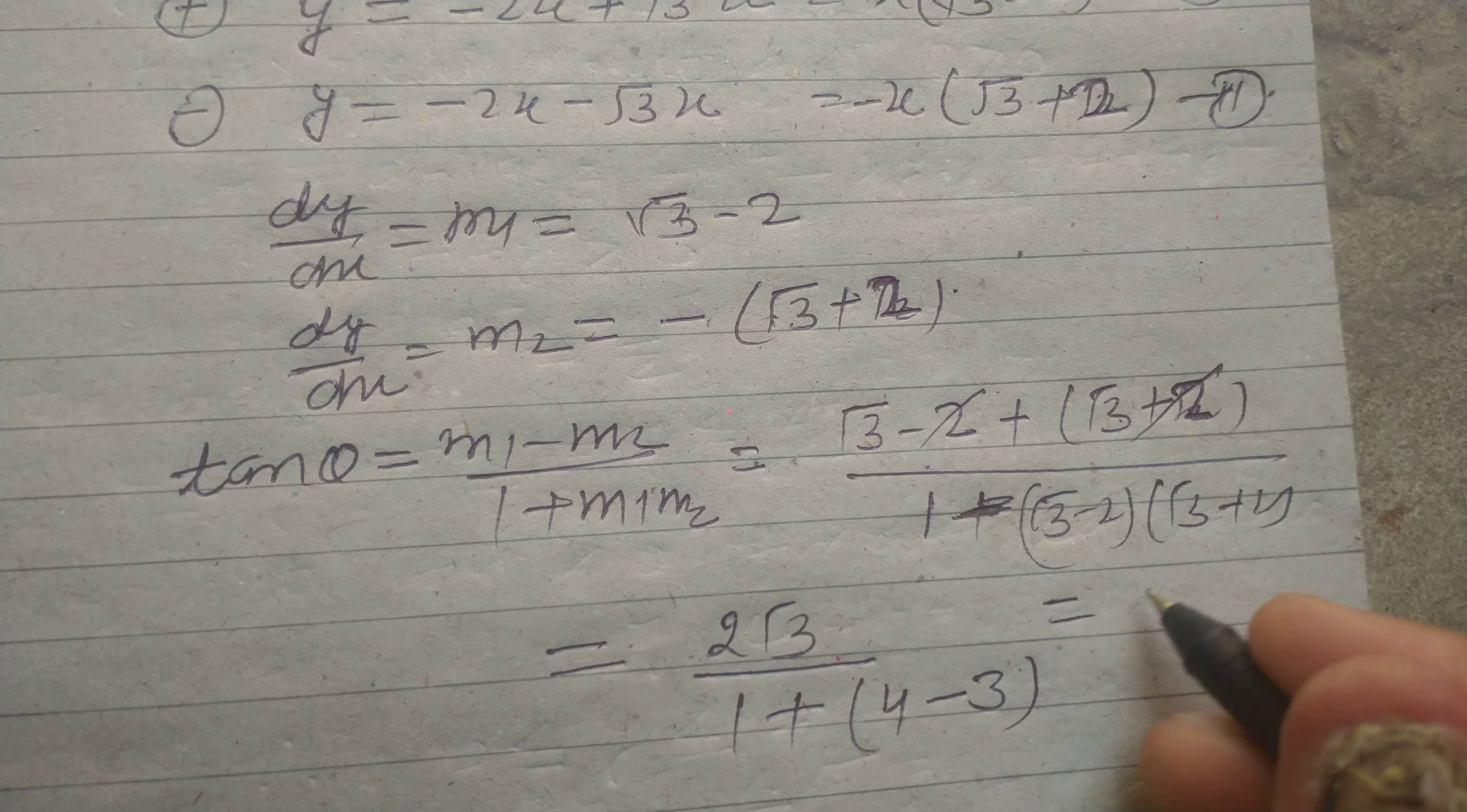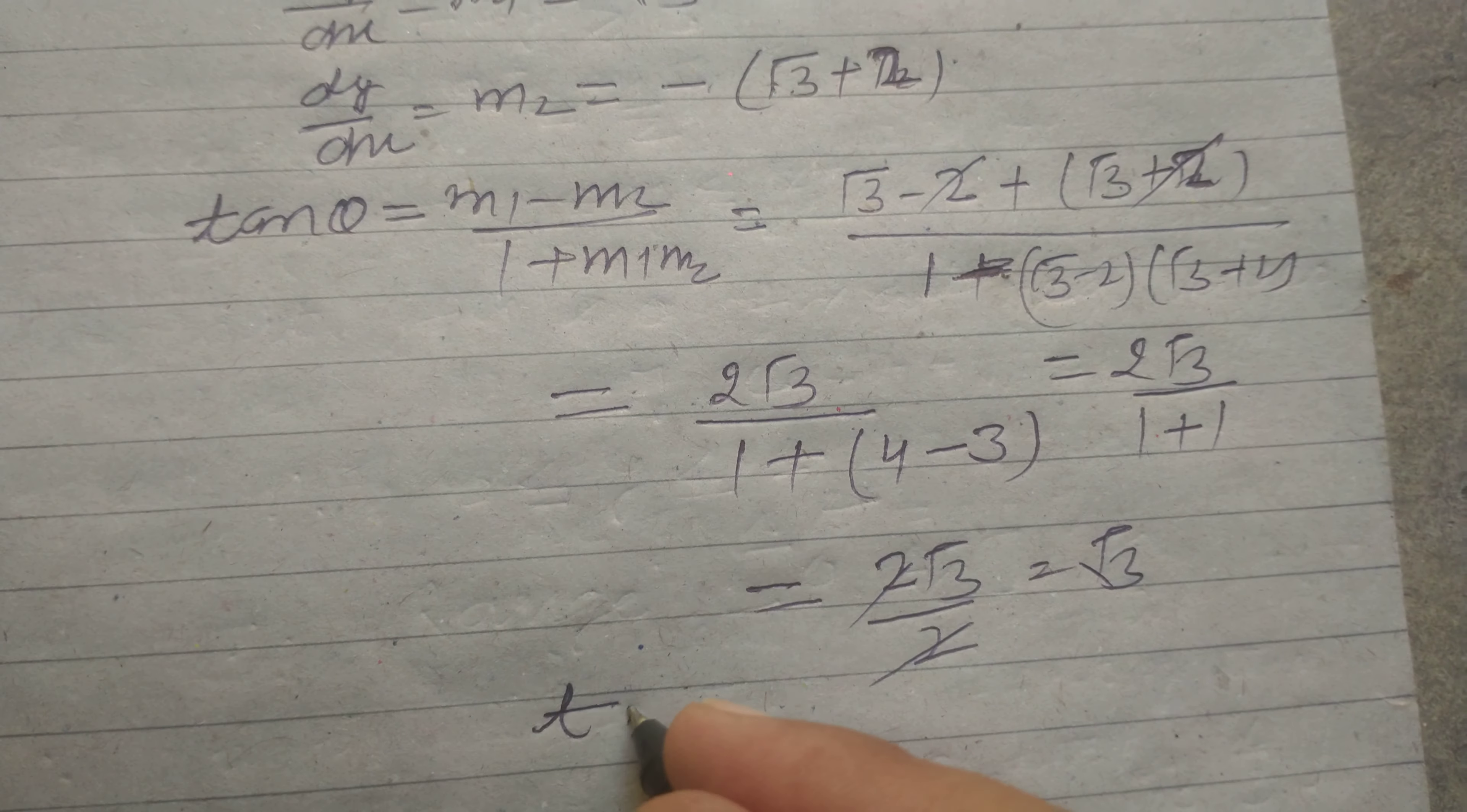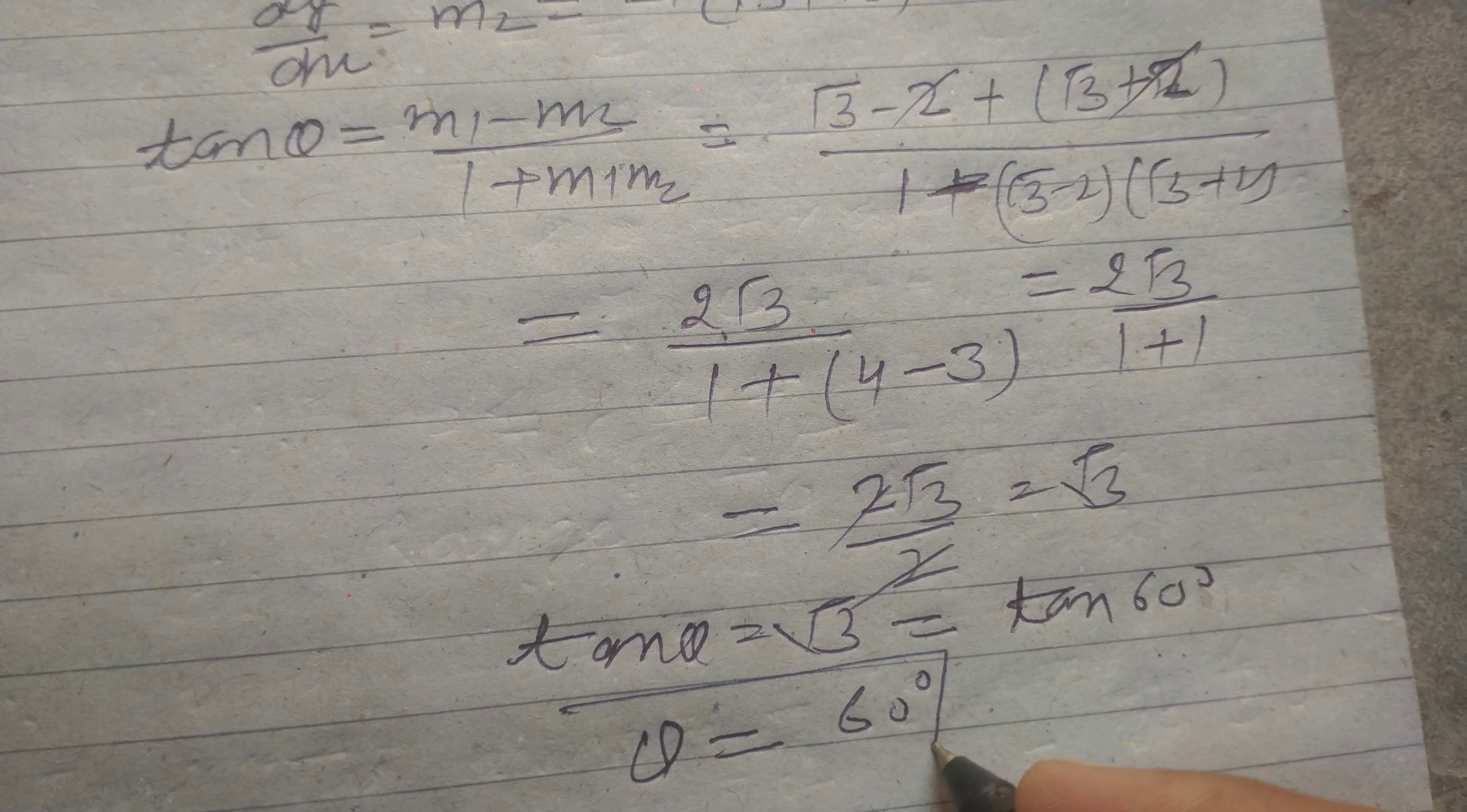This gives the value of tan 60°, therefore angle is 60 degrees between the lines.